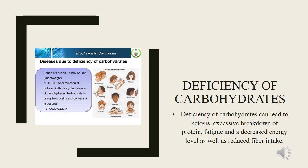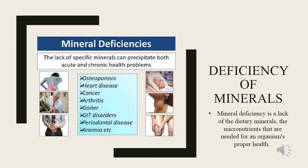Ketosis occurs in the absence of carbohydrates when glucose stores run out. Deficiency of Minerals. What are deficiencies of minerals? Minerals are a specific kind of nutrient that your body needs in order to function properly. A mineral deficiency occurs when your body does not obtain or absorb the required amount of minerals. Your body needs a specific amount of each mineral.